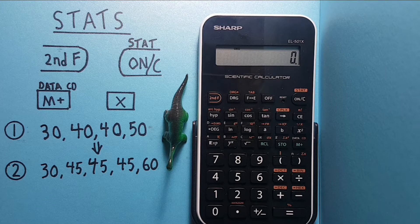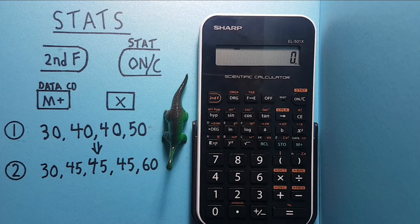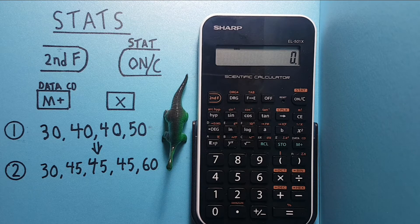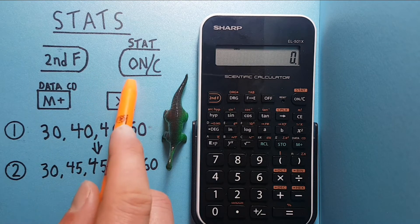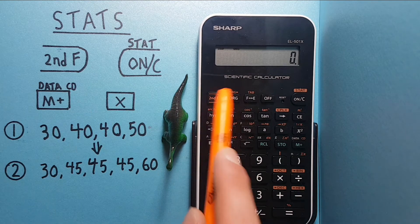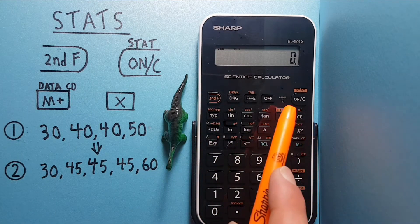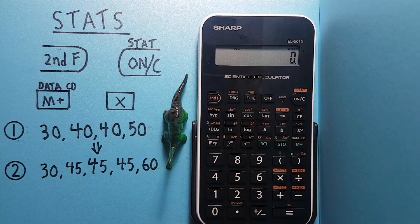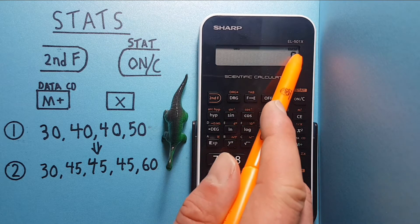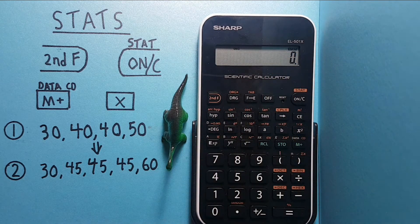The first step is to put our calculator into statistics mode. We do this by pressing the second function and then on keys. So second function, on, and you can now see the word STAT above the zero on the upper right hand side of the calculator.